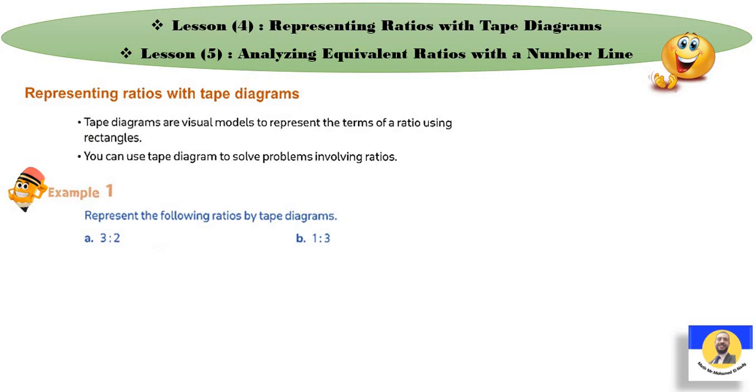Example 1: Represent the following ratios by tape diagram. The first is 3:2. How can we draw it? We will draw two rectangles at the same. First one, we divided into three parts. The second divided into two parts. If here are two parts, the division and the third part must be equal to the unit. That's it. This is called tape diagram. The next one, 1:3. How can we draw it? Here's 1, and here's 3 tape diagram.